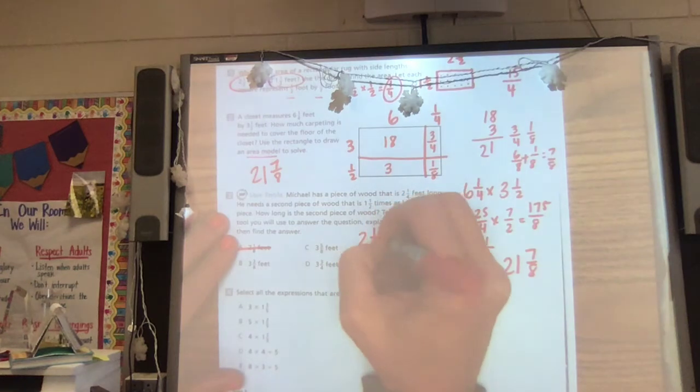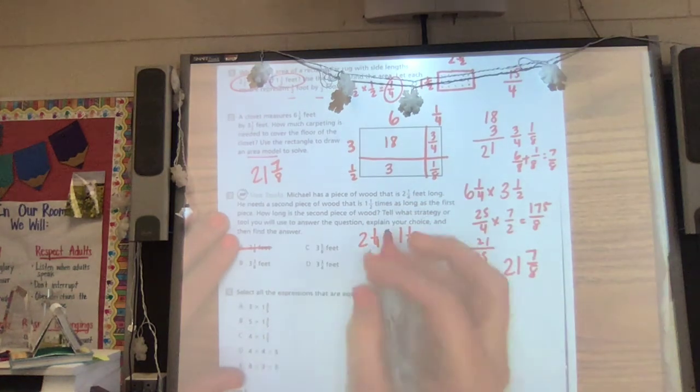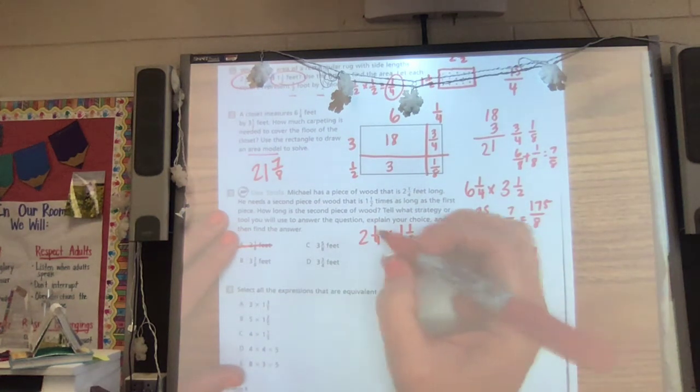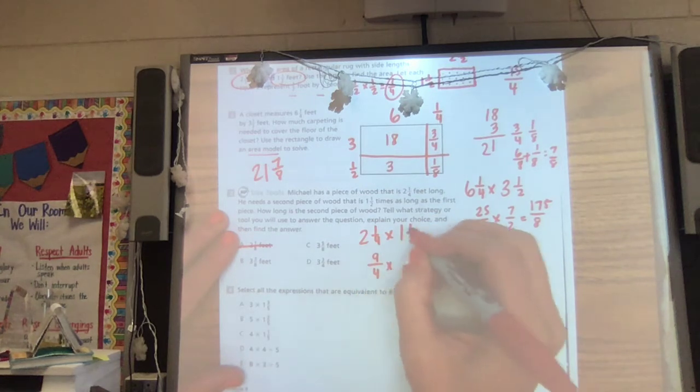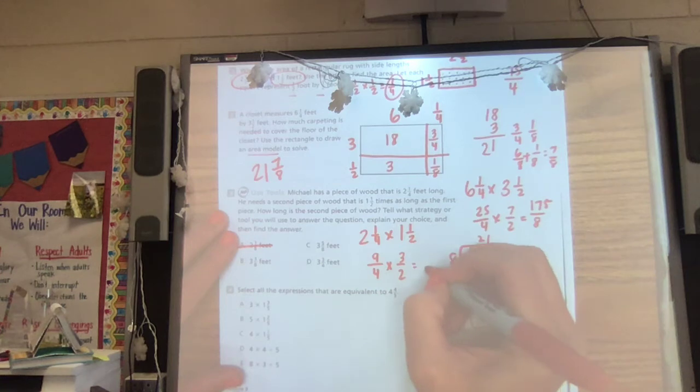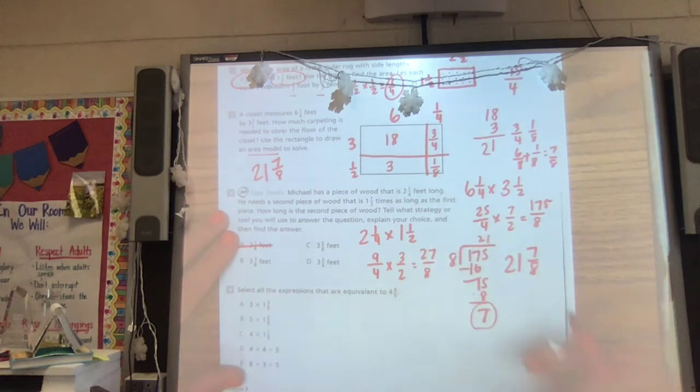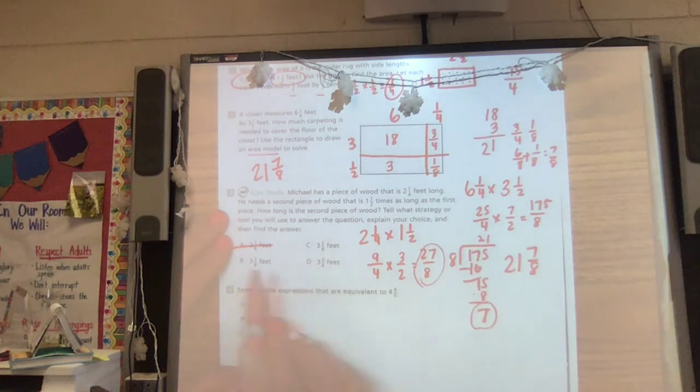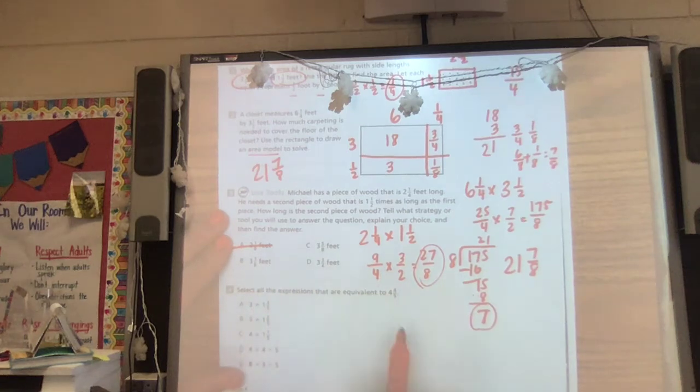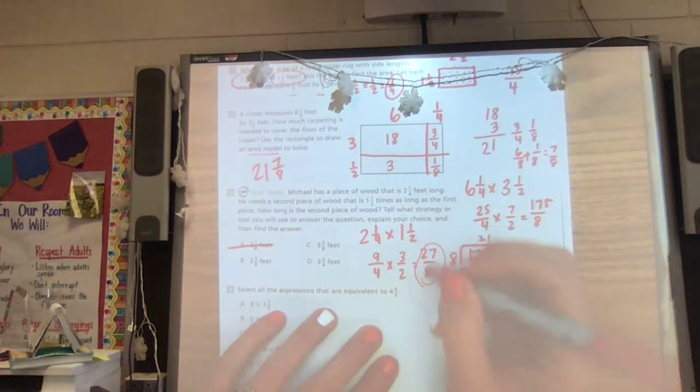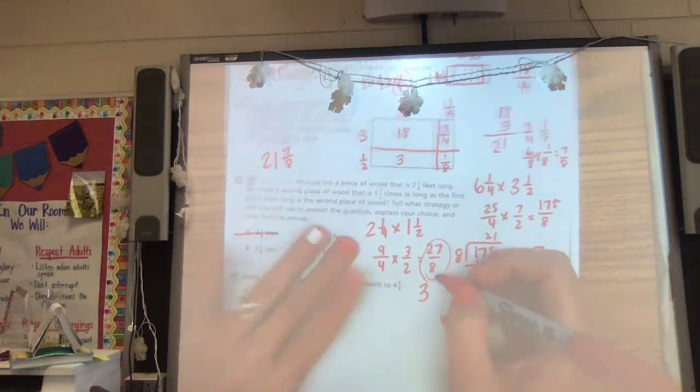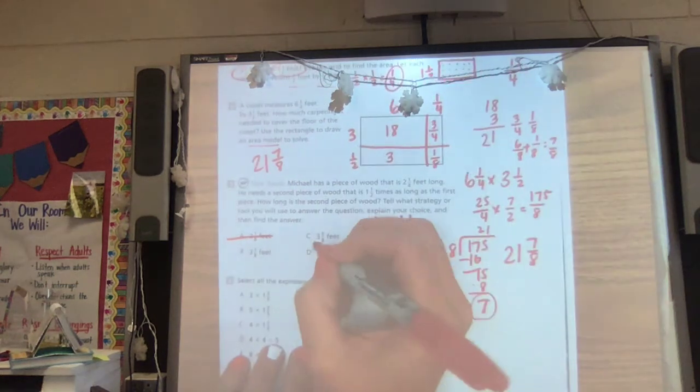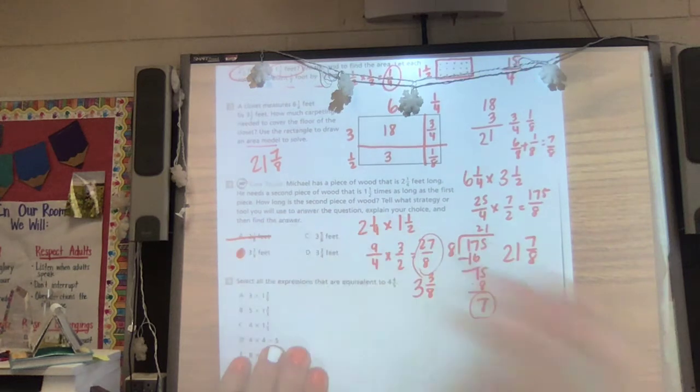So if I have two and a fourth times one and a half, you can solve it whatever way is the best for you. Four times two is eight plus one is nine fourths and one and a half is three halves. That would be 27 eighths. Here's an example. Ours is not in an improper fraction. It's a mixed number. So we know eight goes into 27 three whole times because that's 24, 25, 26, 27 and three eighths. So that would be B.